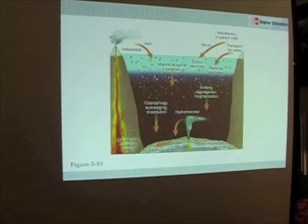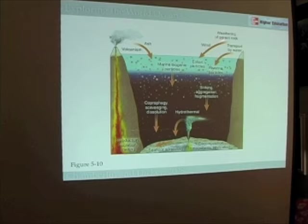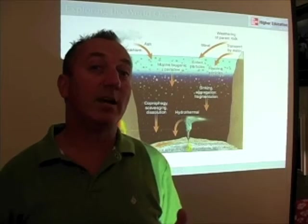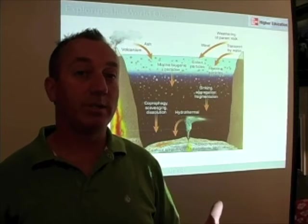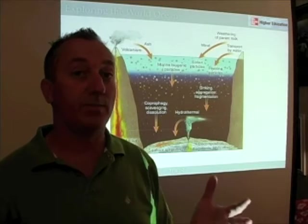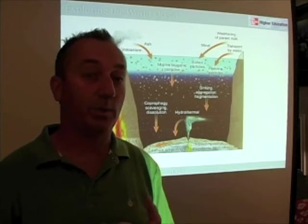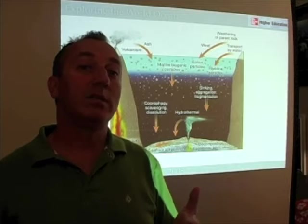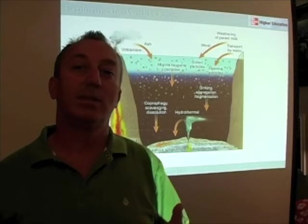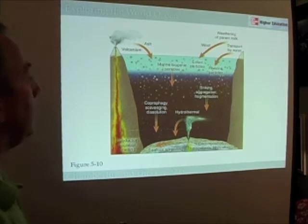Sediments that travel by river are called riverine particles or riverine sediments; those carried by wind are called eolian particles. Wind is not going to carry boulders and cobbles — we don't get 500-mile-an-hour winds on our planet — so wind will deliver smaller sediment sizes than rivers.